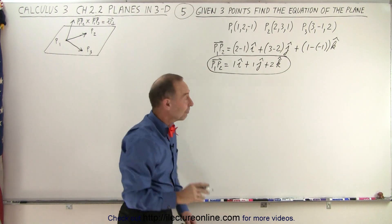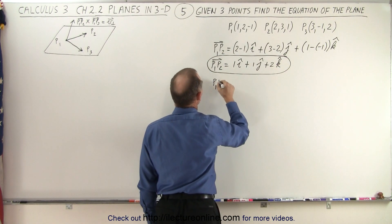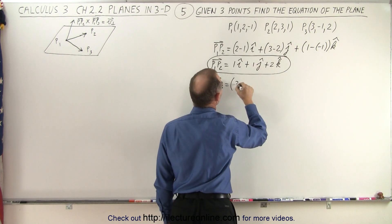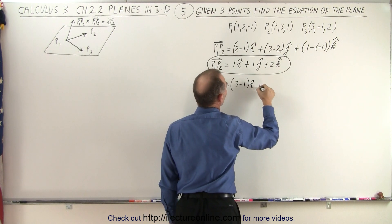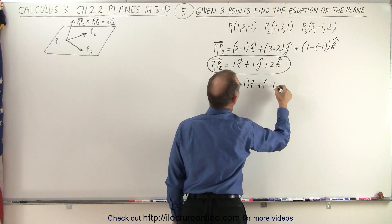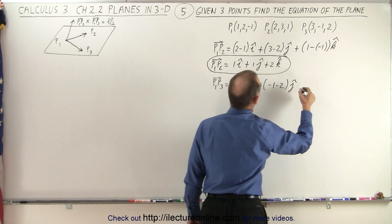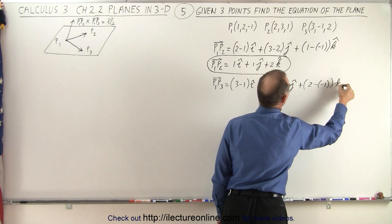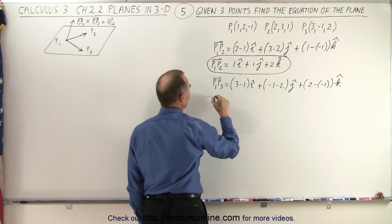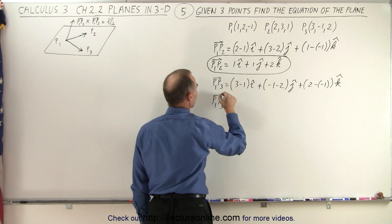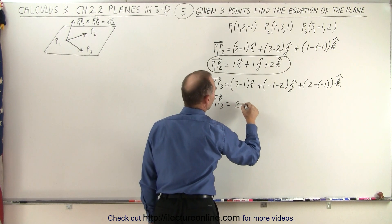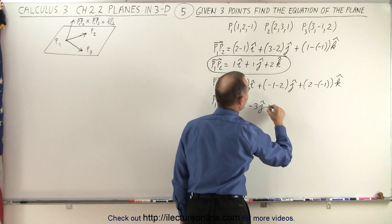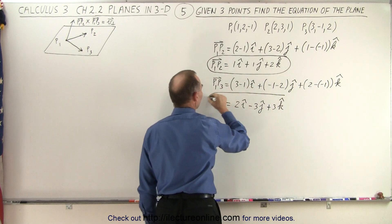Now let's find the second vector on the plane. Vector P1 to P3 is going to be equal to 3 minus 1 in the i-direction, plus negative 1 minus 2 in the j-direction, and plus 2 minus negative 1 in the k-direction. Simplifying that, we get our second vector from P1 to P3: that's equal to 2 in the i-direction, minus 3 in the j-direction, and 2 plus 1, that would be plus 3 in the k-direction. So there's our second vector.